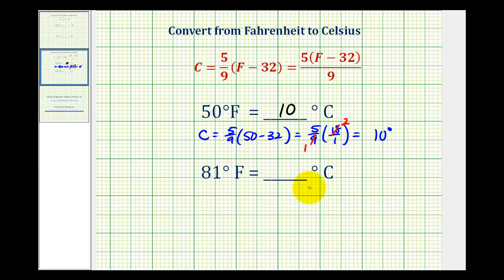Let's take a look at a second example. To convert 81 degrees Fahrenheit to Celsius, we'll now replace F with 81. So we'll have C equals 5 ninths times 81 minus 32. Well, 81 minus 32 is equal to 49. So we'd have 5 ninths times 49 over one. Unfortunately, nothing simplifies here.